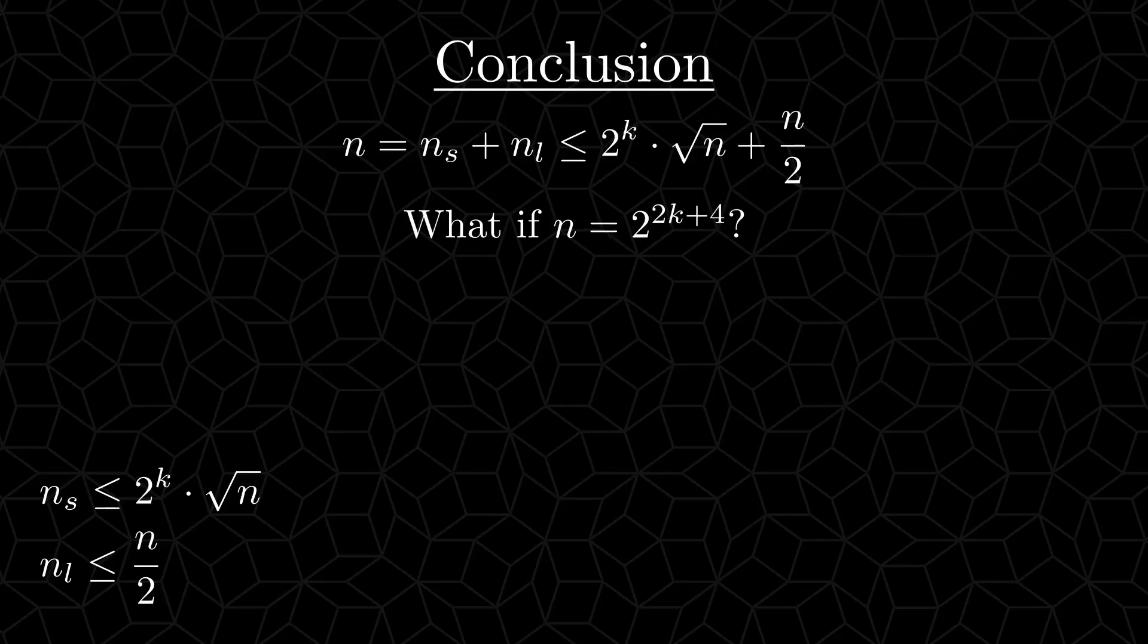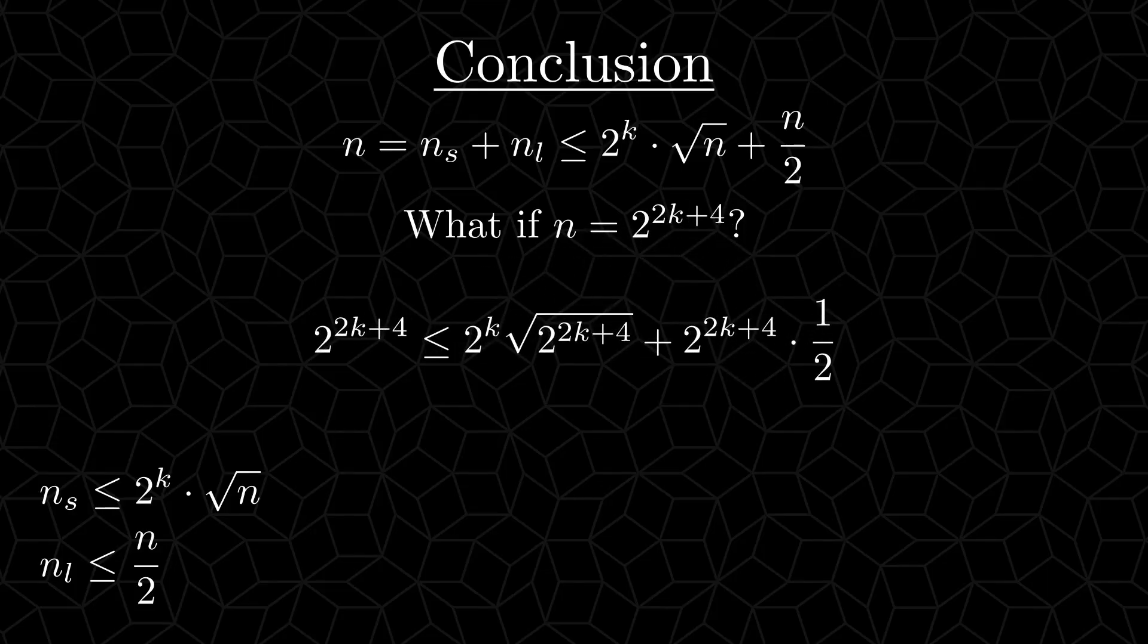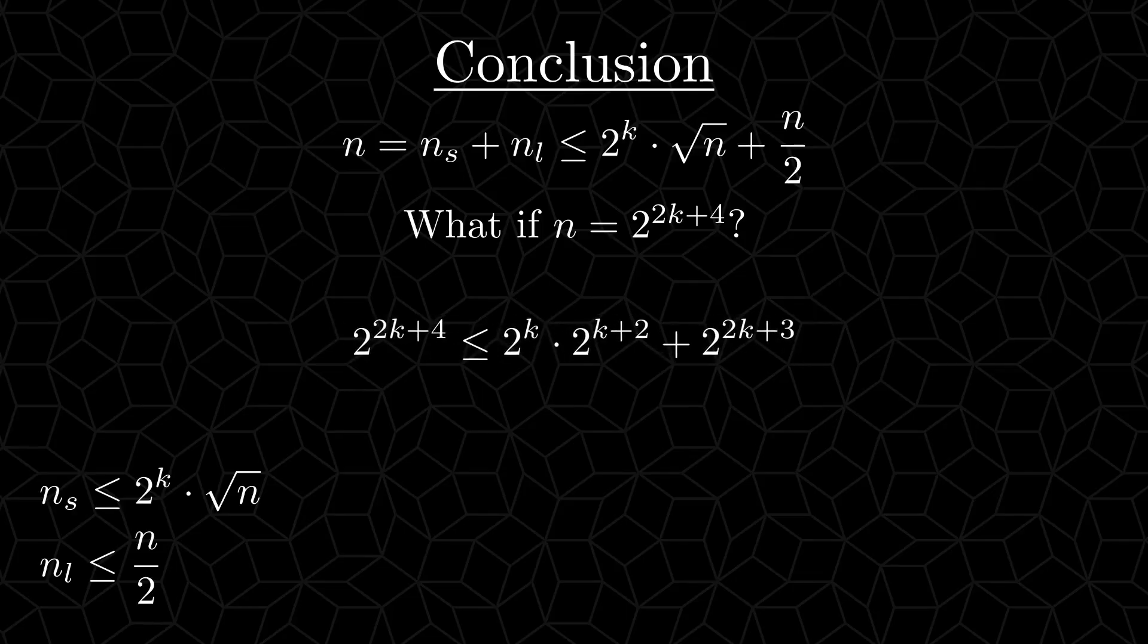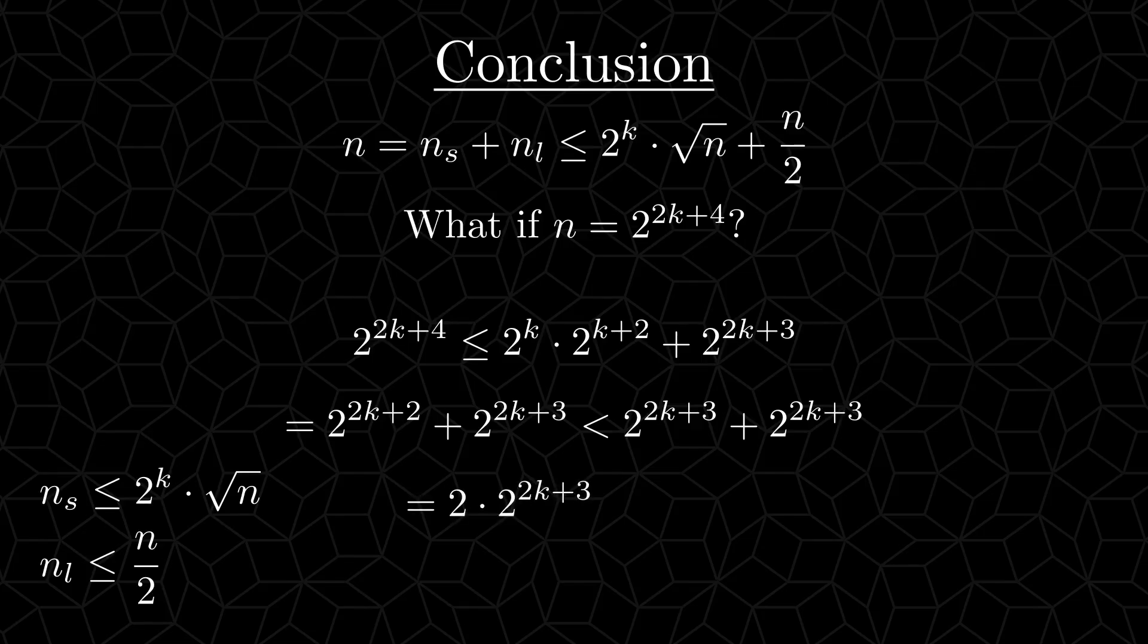Simplify away the square root, simplify the fraction, and pretty things up a little bit. These two terms can be multiplied together to give us 2 to the power of 2k plus 2. And now we would like to do this addition, but it's a little bit more difficult than it has to be because the exponents aren't equal. So we make them equal. This picks up another inequality sign. Now these two powers can be added together, and we get 2 times 2 to the power of 2k plus 3, which is also known as 2 to the power of 2k plus 4.